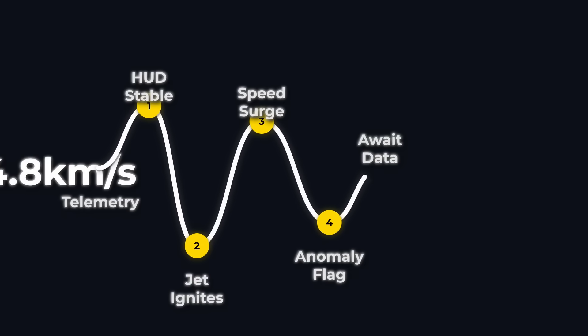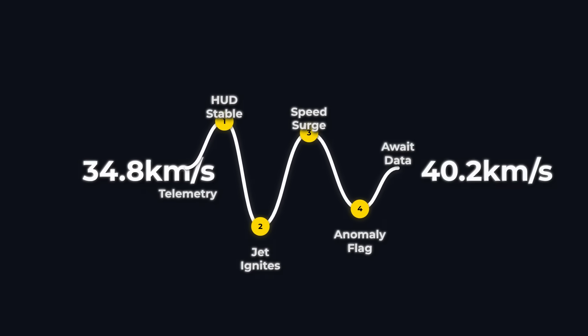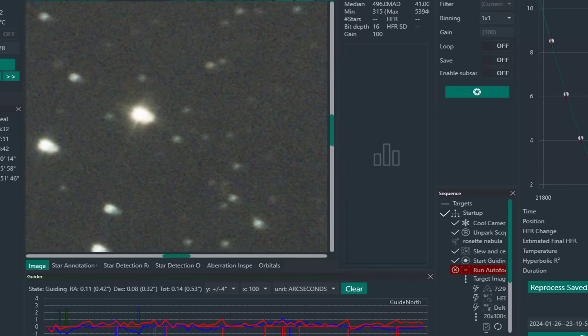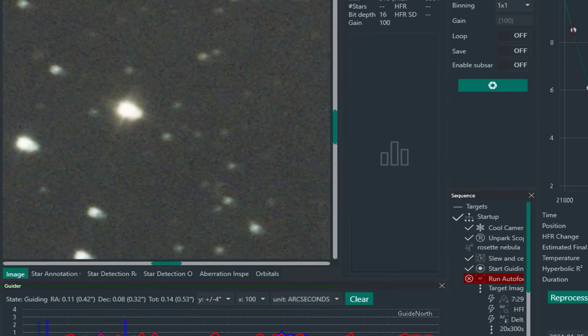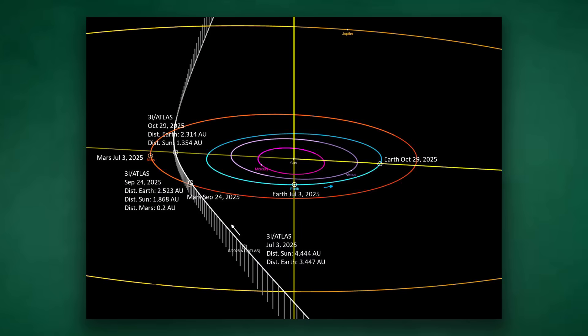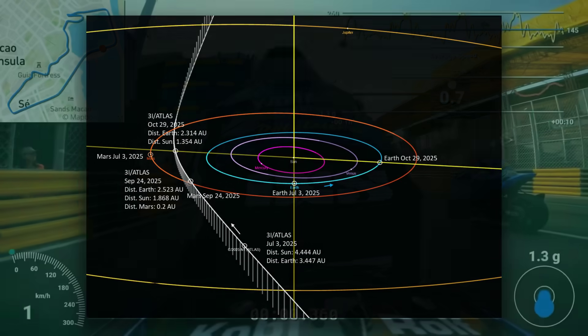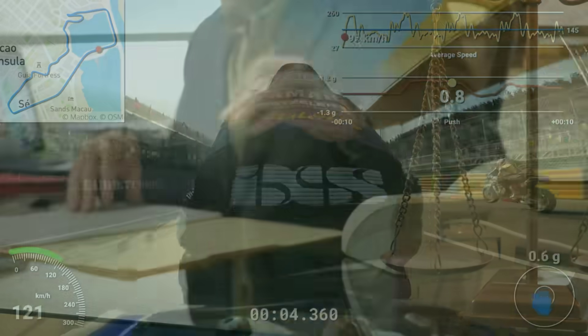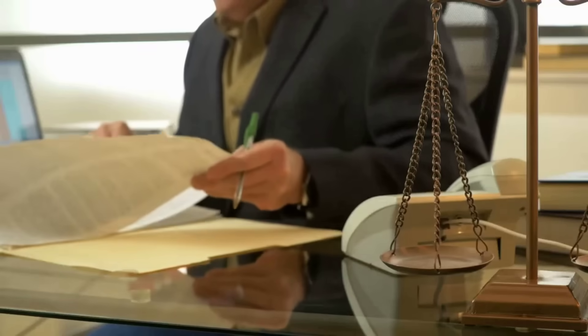One minute the object is just another icy wanderer. The next, a shift in speed or a burst of dust, could rewrite the textbooks. Forums buzz with speculation. Will 3I/ATLAS break apart, like Borisov? Will its path start to curve for reasons no one can explain? The tension is real. Every new data point could tip the scales between ordinary and extraordinary.